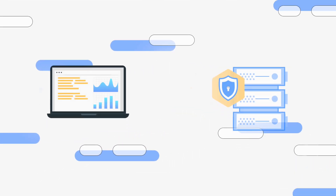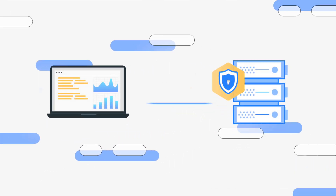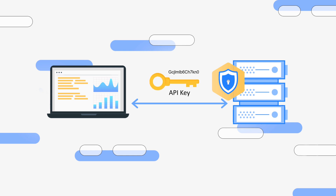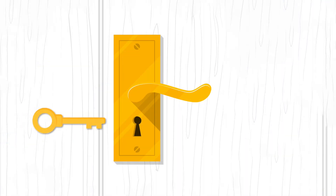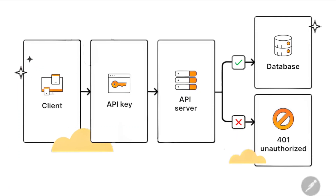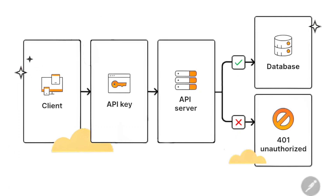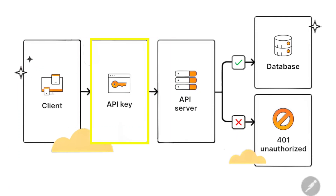An API key is a unique identifier that allows you to access an API. It's like a special code that tells the API that you're allowed to interact with it. Think of it as a key to a locked door. Every time you make a request to an API, you send this key along with it.